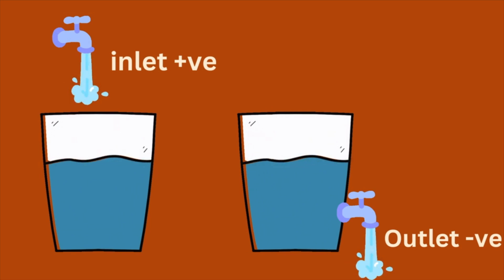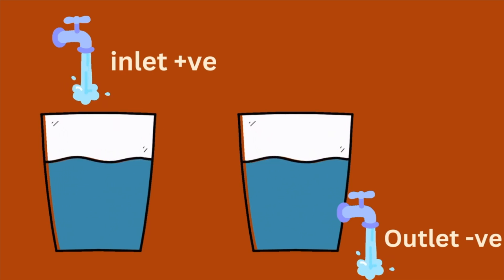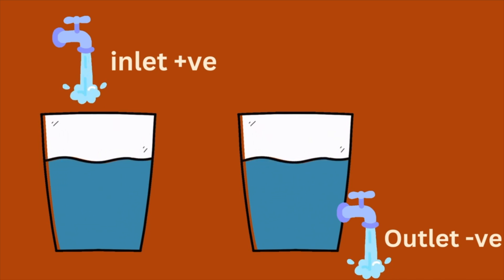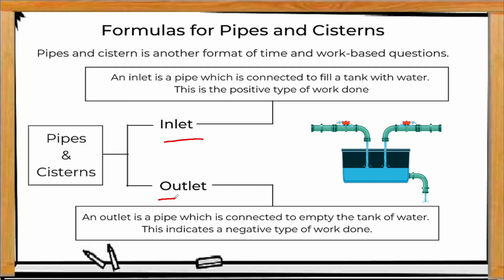In Pipes and Systems there are two terms: inlet and outlet. An inlet is a pipe used to fill the tank — when taking efficiency, assign it a positive sign. An outlet is a pipe used to leak or empty the tank — when taking efficiency, assign it a negative sign. The remaining approach is similar to Time and Work.